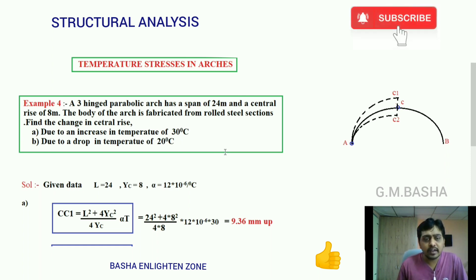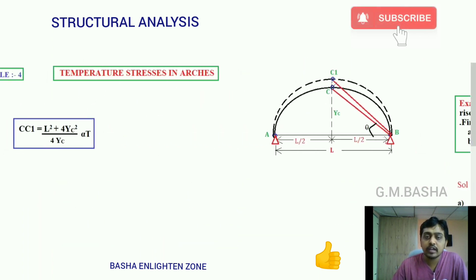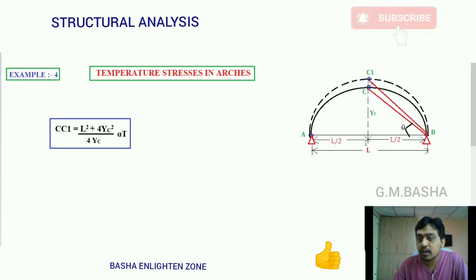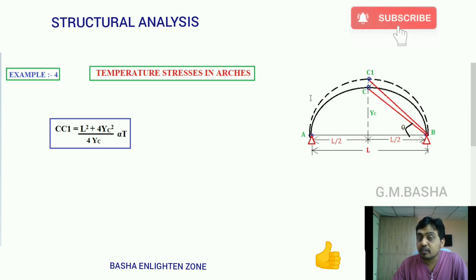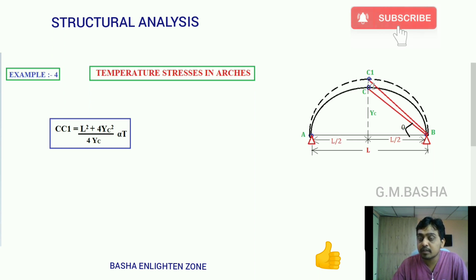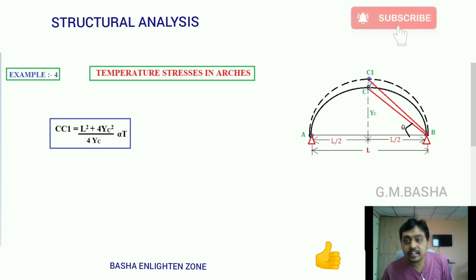This is a solid example; this type of problem may come for two-mark questions in your semester examination. All the data will be given in the question itself — you just have to substitute into the formula. Let me give a small clarification using a diagrammatic representation. This is a three-hinged parabolic arch with hinges at both abutments A and B, and another hinge at the crown position C.